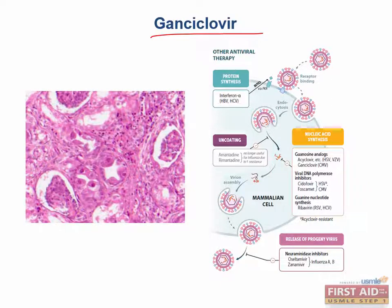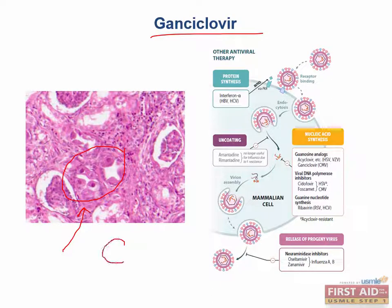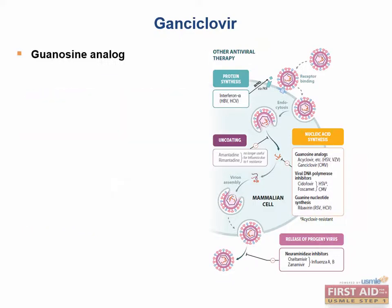The key thing seen in this image is the presence of owl-eye inclusion bodies. Now, let's think back to our virology section — what does the presence of owl-eye inclusion bodies indicate? Owl-eye inclusion bodies are significant for an infection by the CMV virus.